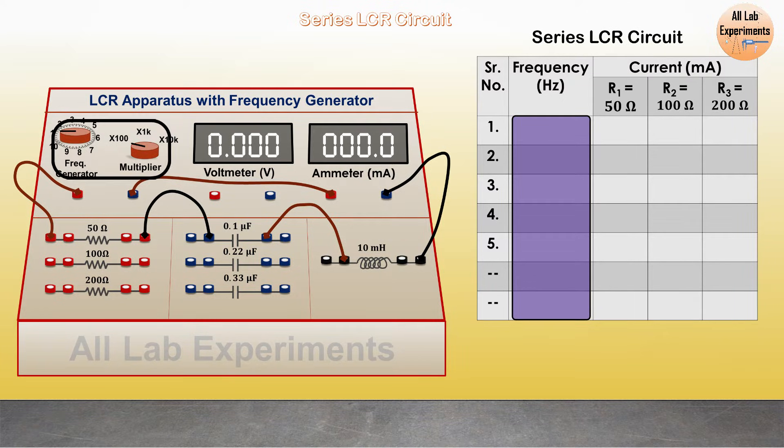On the top left of this board we can see we have a frequency generator and a multiplier. If I am setting this knob of frequency generator to 1, multiplier value is 100, it means 1 into 100 equals 100 hertz frequency. So if I increase its value, its value will be 100, 200, 300, 400 hertz.